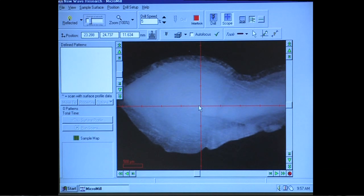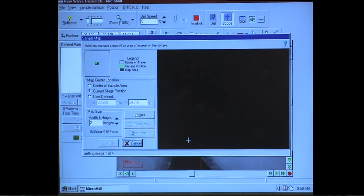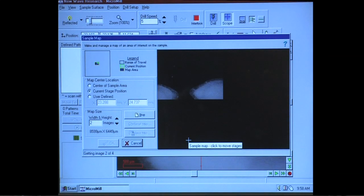Click on the sample map in the lower left corner of the screen, then click Current Stage Position, and then Make New Map in the window that pops up. The program will automatically make the map in four quadrants.